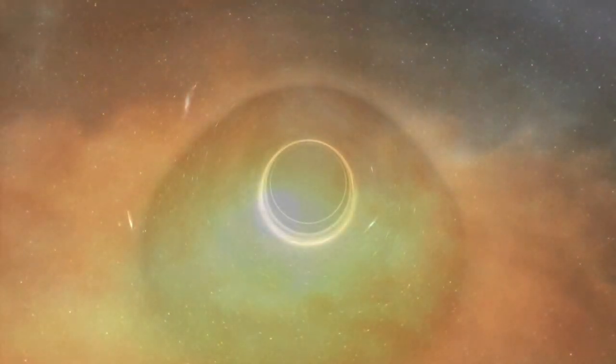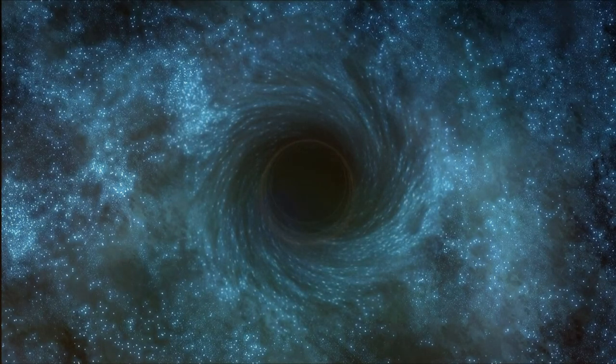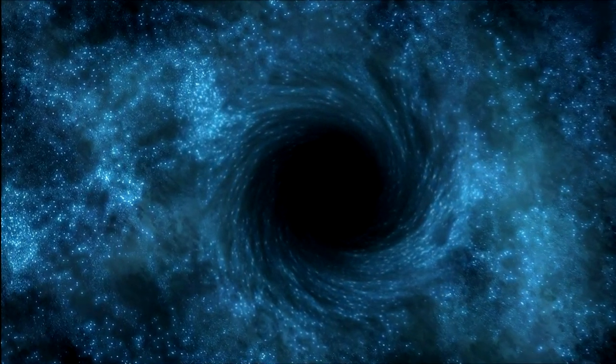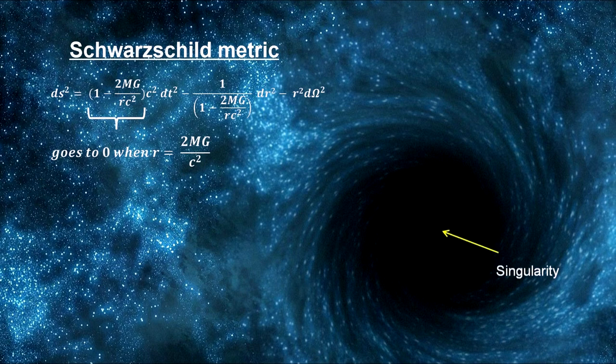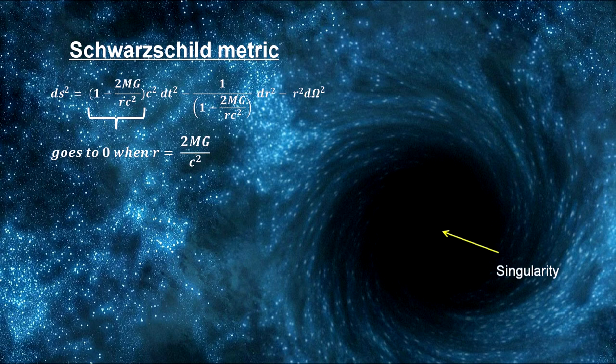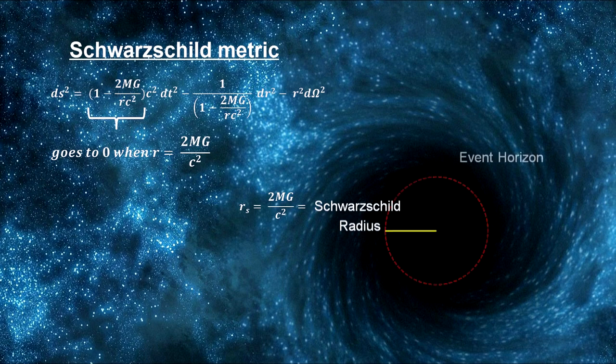we discussed how they are formed from collapsing massive stars too big for neutron pressure to halt their collapse to a point called a singularity. The Schwarzschild metric showed that if the mass of a body should contract to a small enough radius, it could capture light itself. This radius is known as the Schwarzschild radius and forms a sphere known as the event horizon.